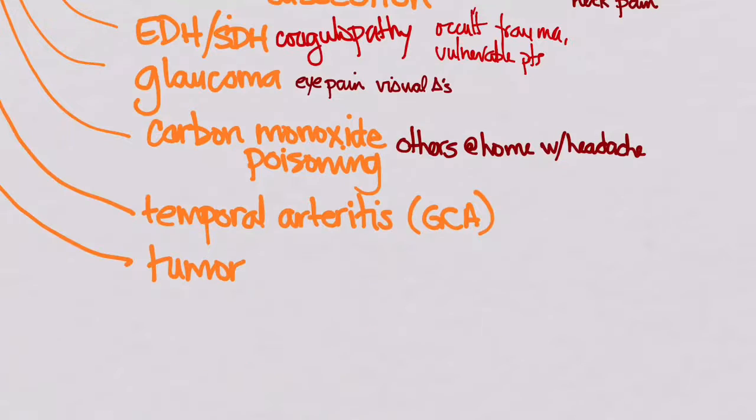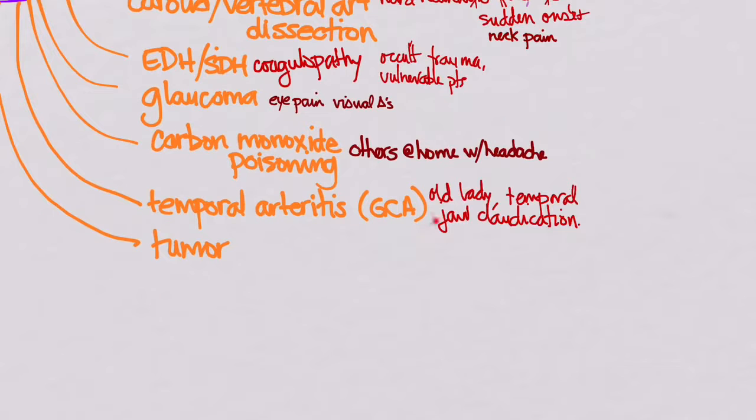For carbon monoxide, you're going to worry about patients that others at home have headaches. Maybe uncle and cousins and even the dogs are puking. And so you've got to worry about that, especially in the beginning of winter when you start turning on your furnace for the first time, and that releases the carbon monoxide. Temporal arteritis, you've got to worry about the old lady who's got temporal pain or jaw claudication, and it doesn't take much to start thinking of that in those older people. And for tumor, you're going to have progressive daily headaches that are just getting worse and worse, and usually some neurologic finding with it, too.